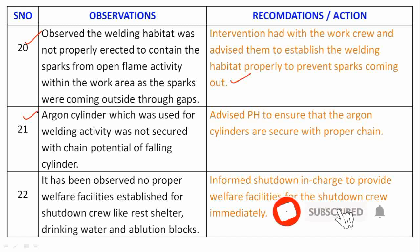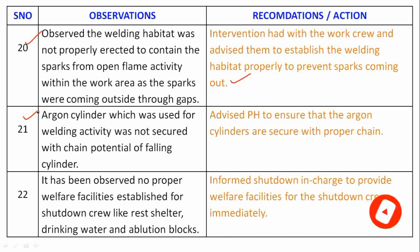Observation 21: An argon cylinder used for welding activity was not secured with a chain, with the potential for the cylinder to fall. Recommendation: Advise the permit holder to ensure that argon cylinders are secured with a proper chain.